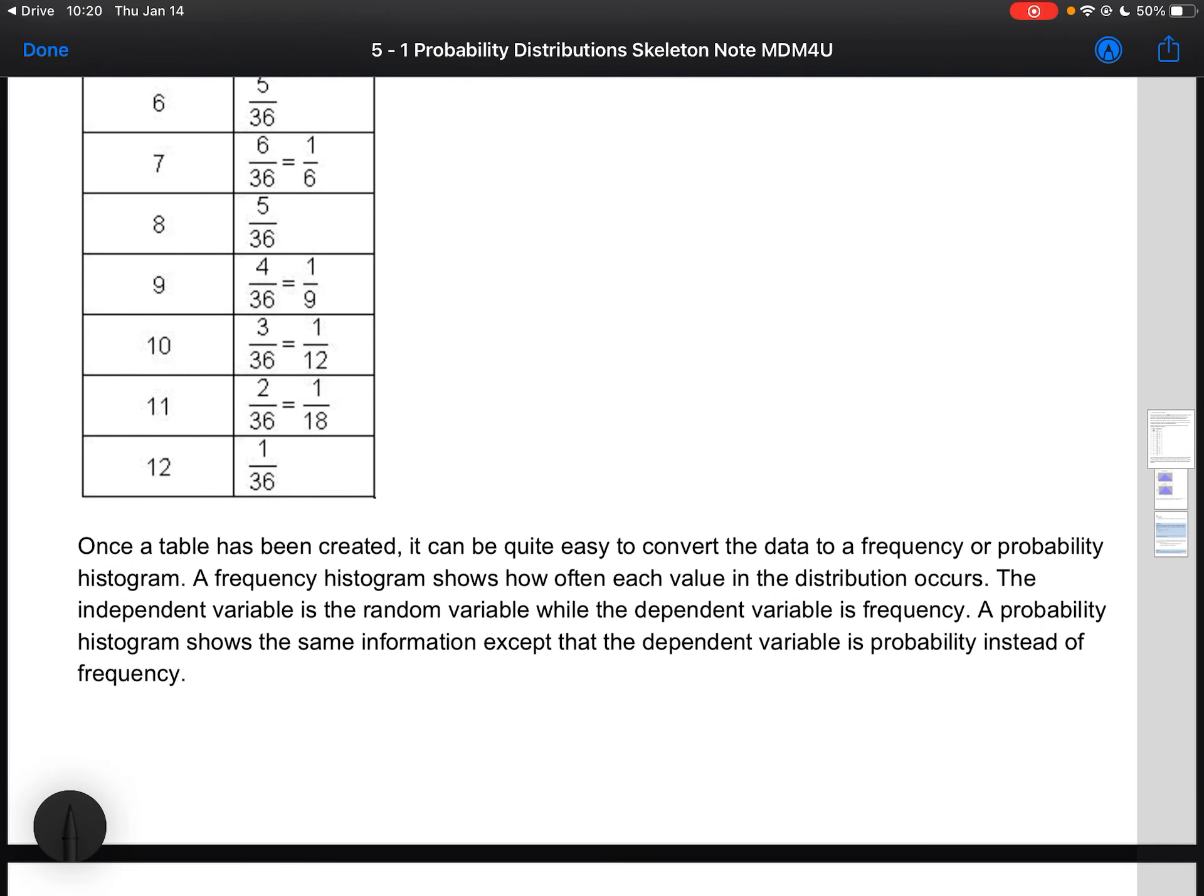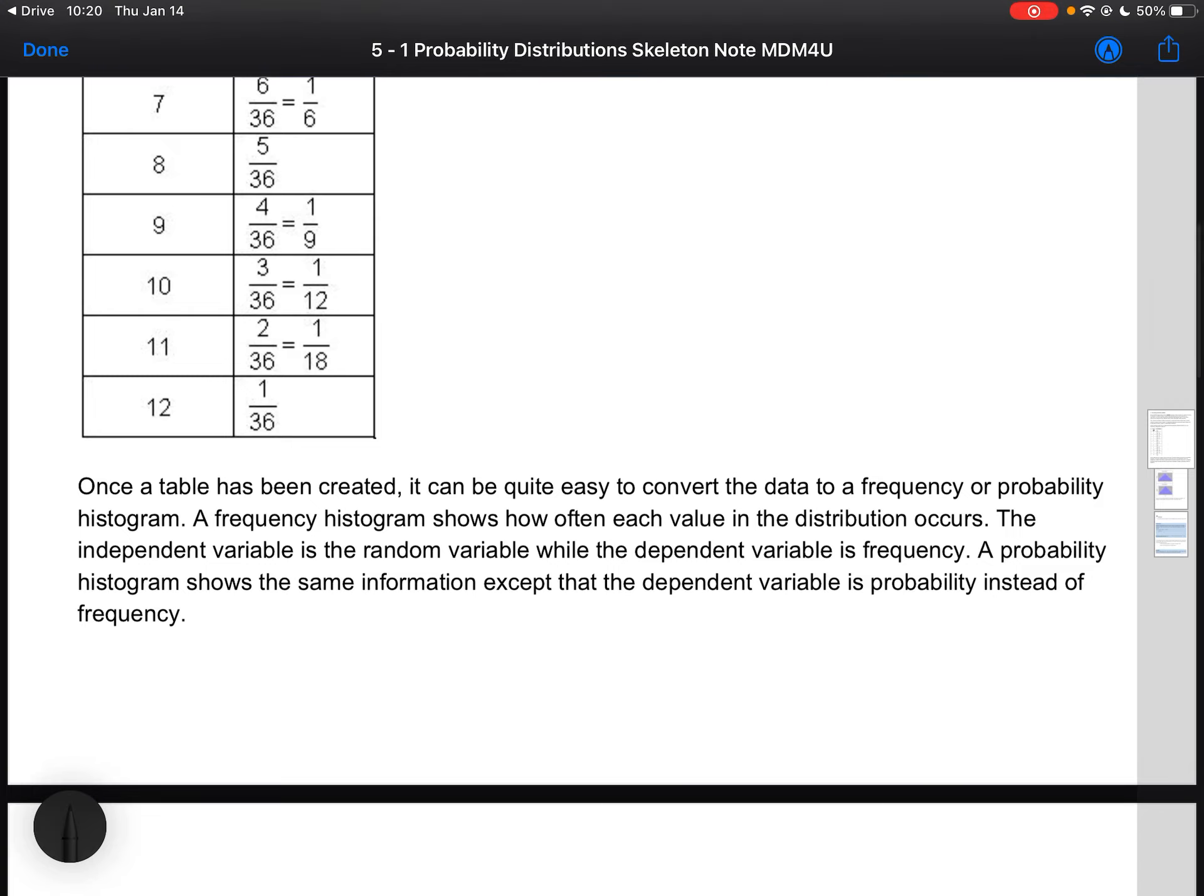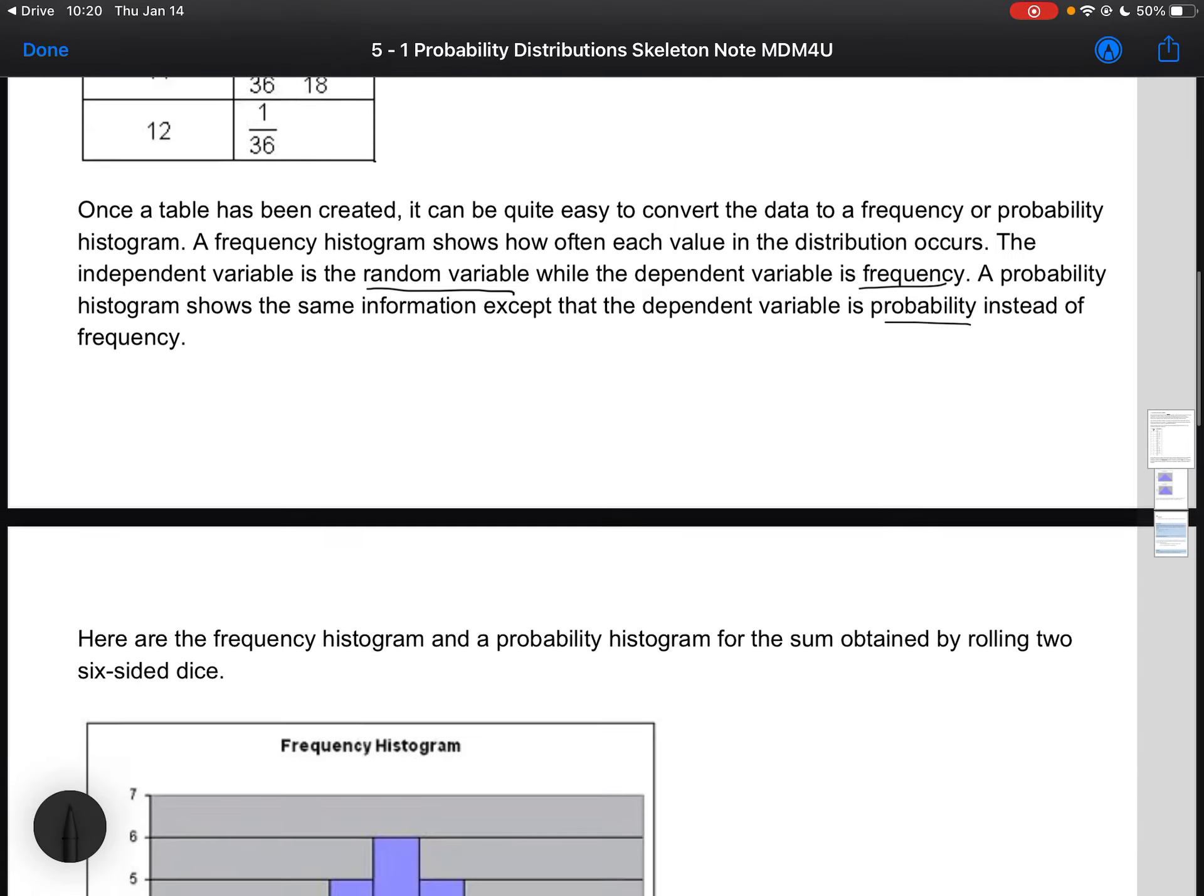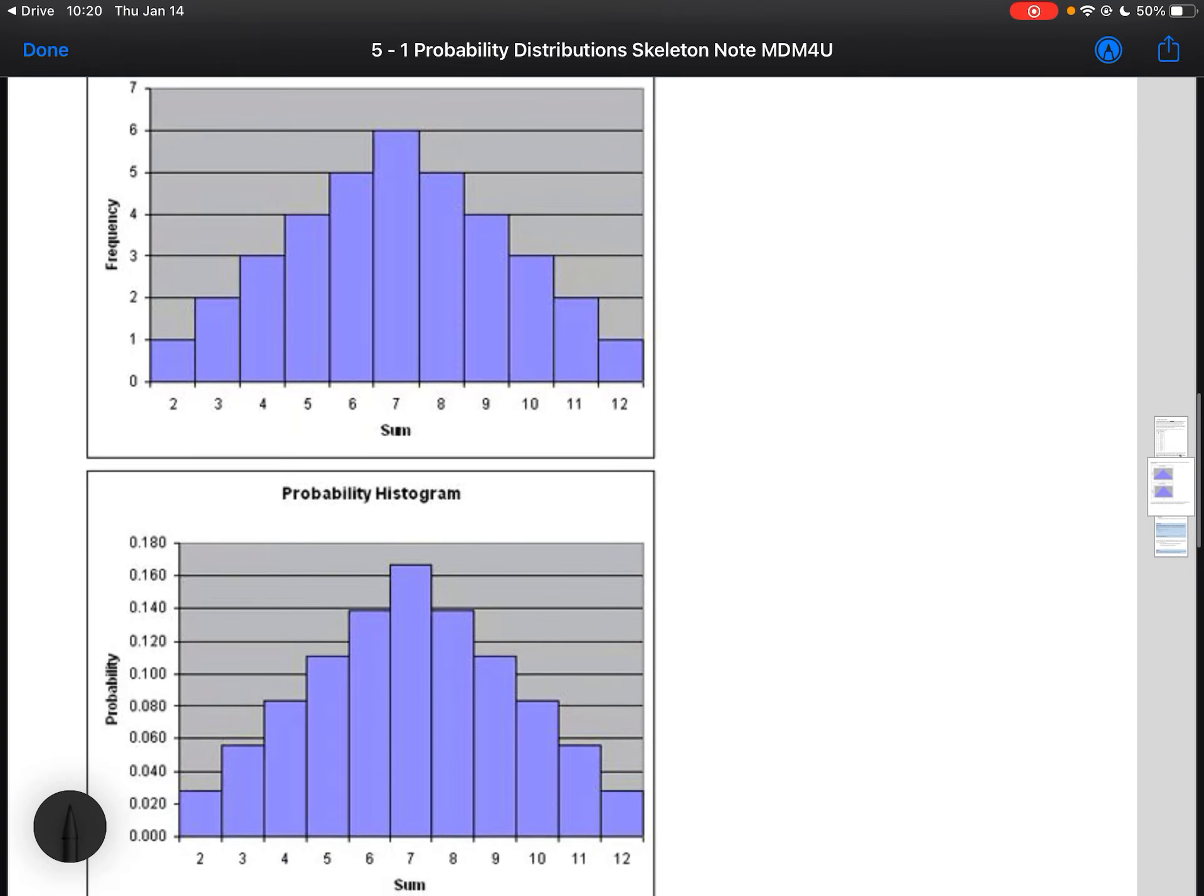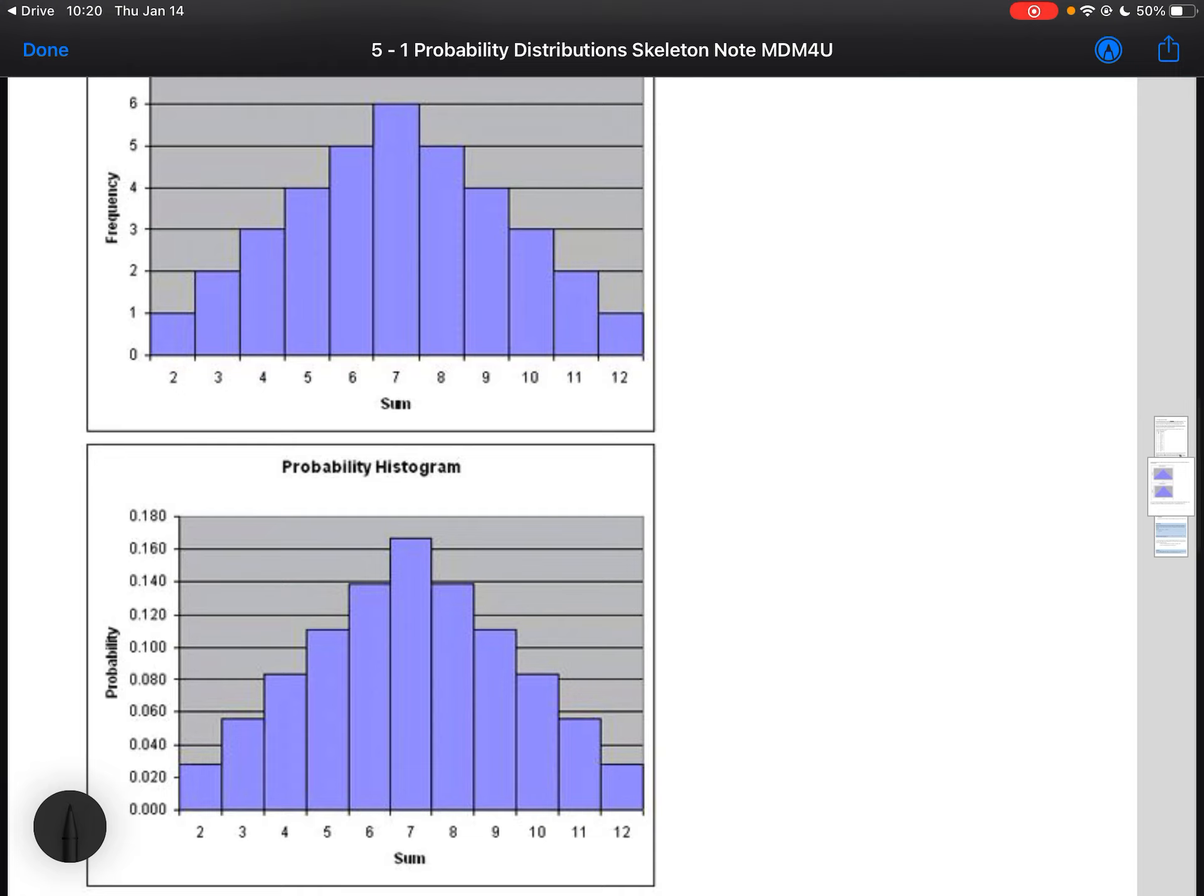Once the table has been created, we can create a histogram from that which shows how each value in the distribution occurs and gives you where the majority of the results you can expect. The independent variable is always going to be the random variable, while your dependent variable is going to be frequency or probability. There's an example shown below: the frequency histogram and the probability histogram, which are exactly the same. The only difference is that the y-axis is a different measure.